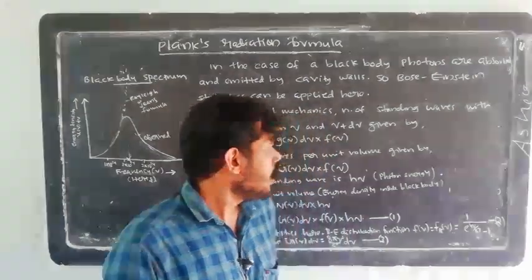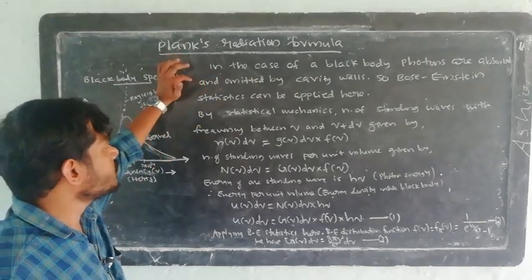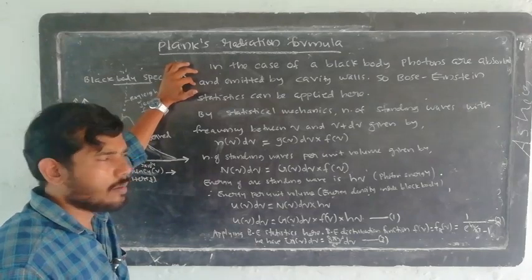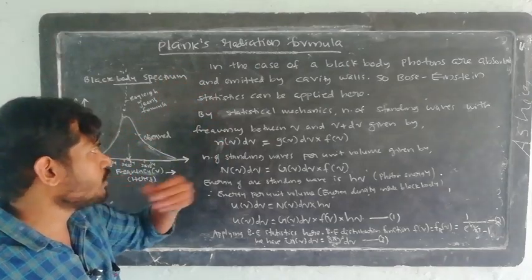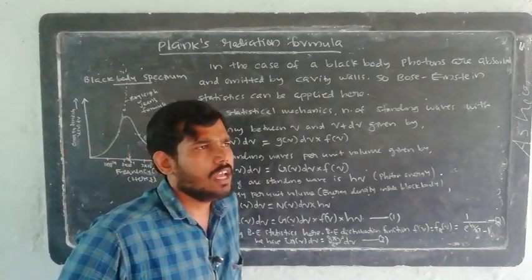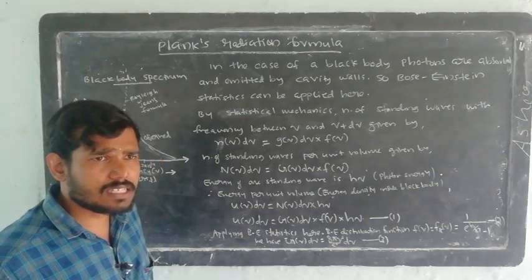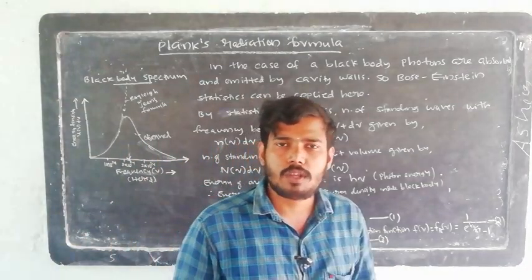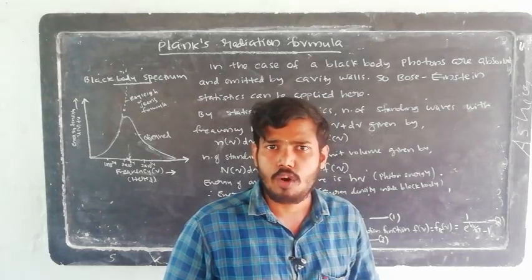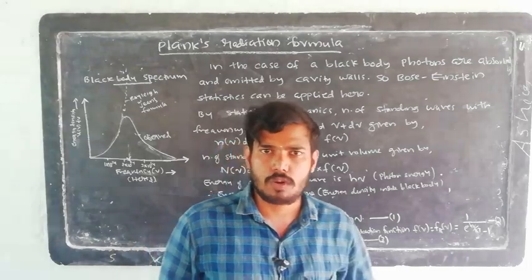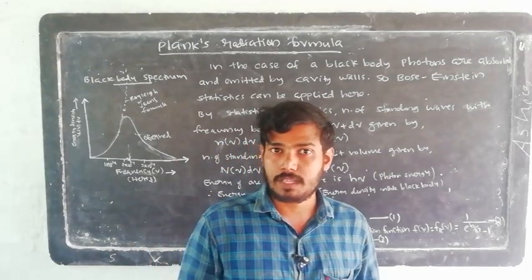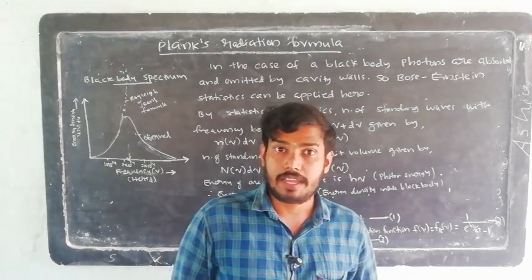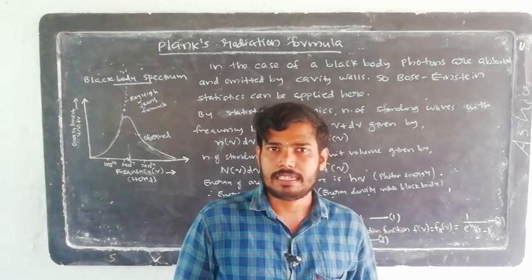We apply this to the black body: photons are absorbed and emitted by cavity walls. Since photons are absorbed and emitted by black body cavity walls, Bose-Einstein statistics can be applied here. The key formula of statistical mechanics is: N(ε)dε = G(ε)dε · F(ε). The number of particles having energy between ε and ε+dε equals G(ε)dε into F(ε), where G(ε)dε is the number of states — the statistical weight.